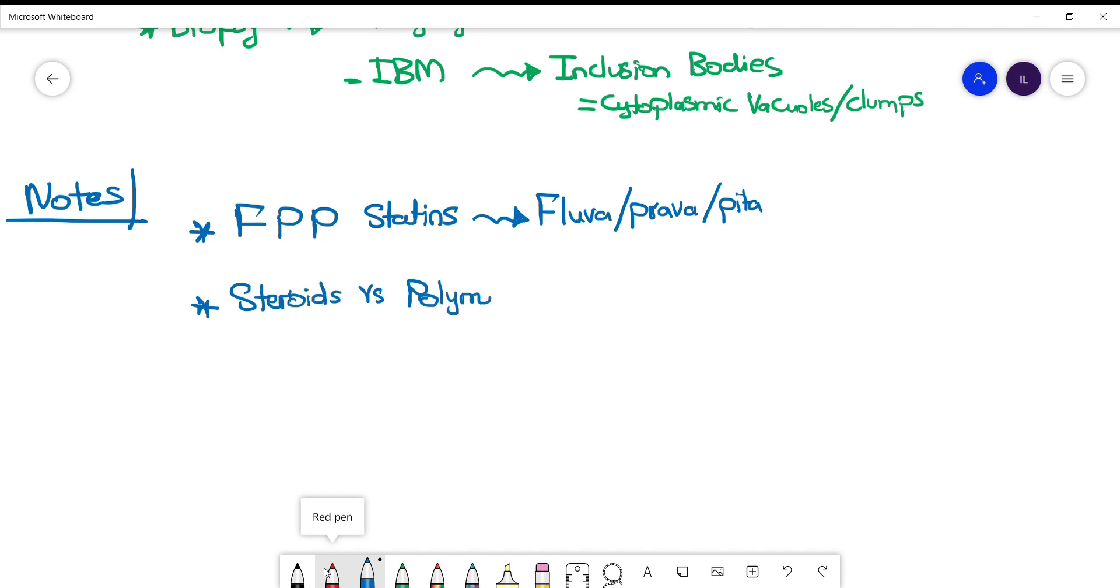You need to differentiate between steroids and polymyositis because patients with polymyositis are treated with steroids. The easiest way is decreasing the dose of steroid. If you decrease the dose and the patient comes next week with worse symptoms, this is polymyositis. If the patient has steroid myopathy, decreasing the dose will help and fix the problem.